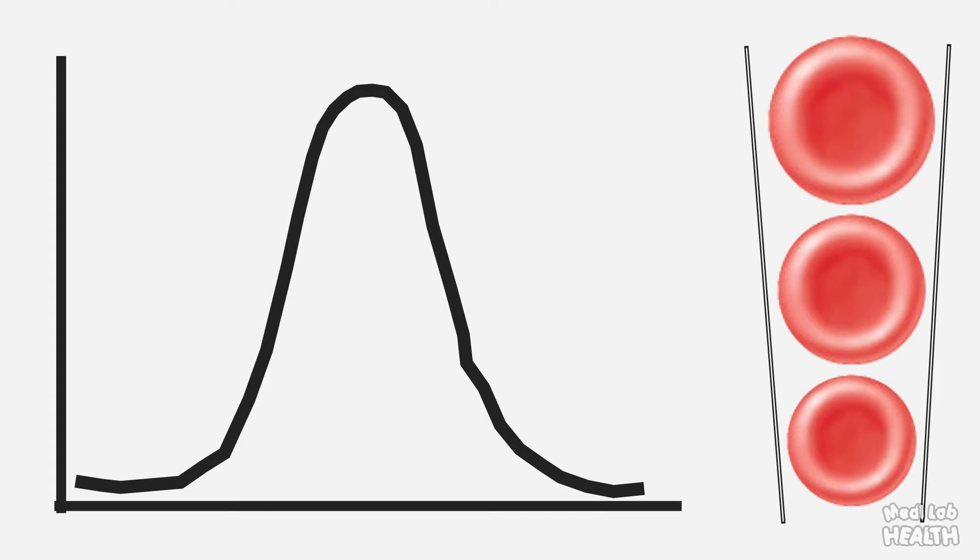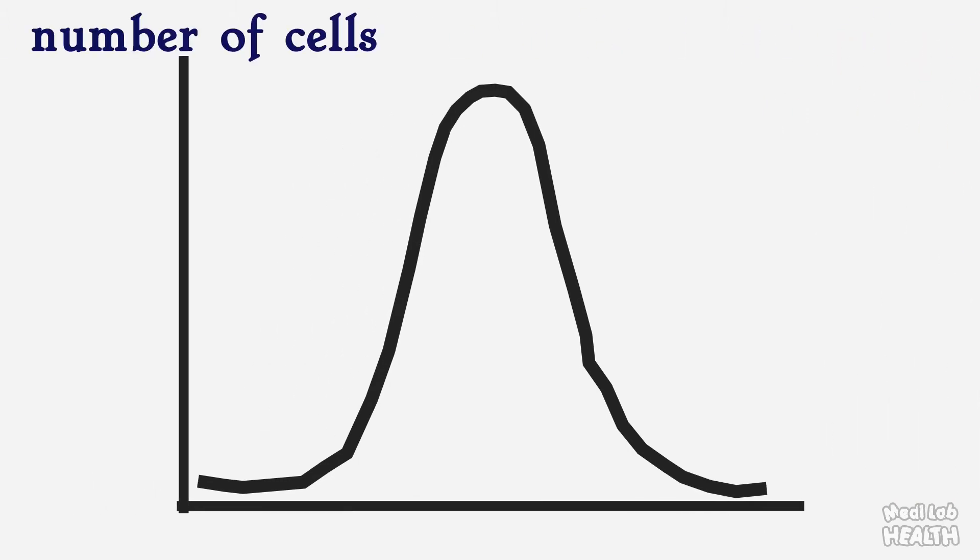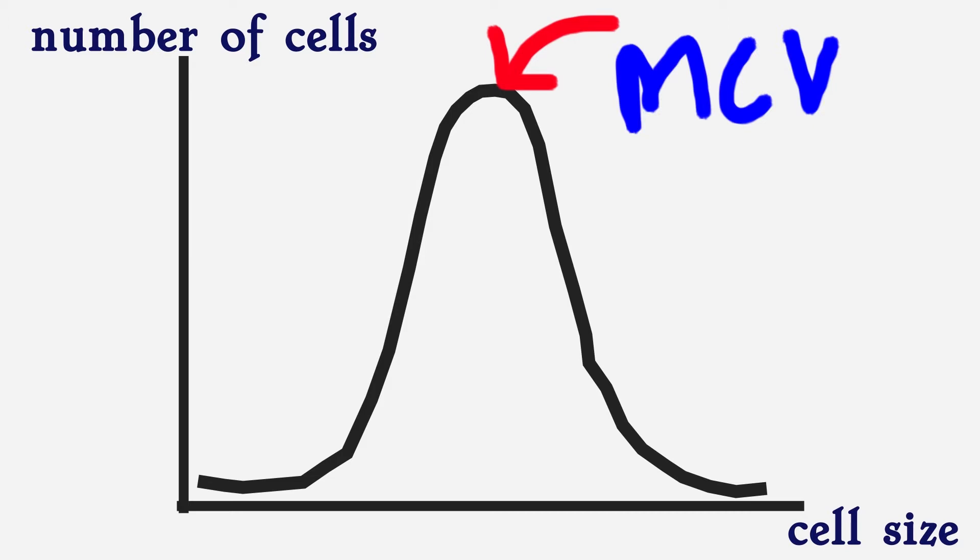In this curve you can see the Y axis is number of cells, and X axis is cell size in femtoliters. Actually, the mean value of this distribution curve is equivalent to the MCV or mean corpuscular volume, which represents average red cell size or volume.